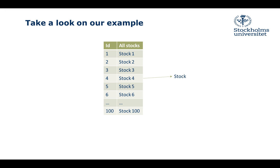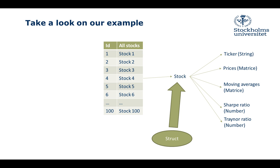Each of these stocks - stock 1, stock 2, stock 3, stock 4 - is a struct which has a ticker as a string, prices as a matrix, moving averages as a matrix, then Sharpe ratio as a number and Treynor ratio as a number.